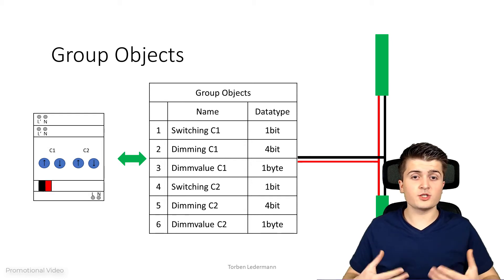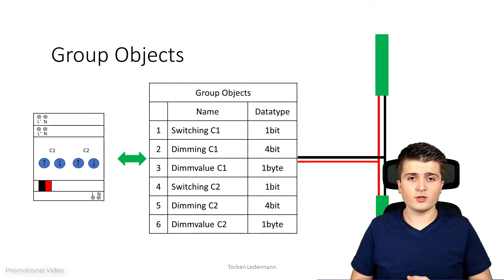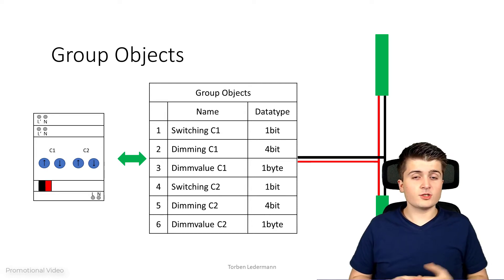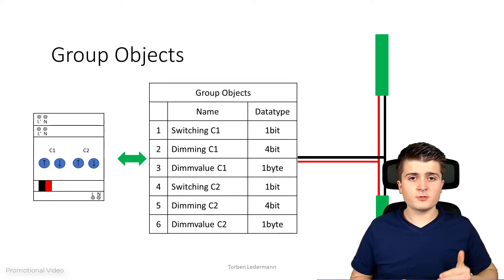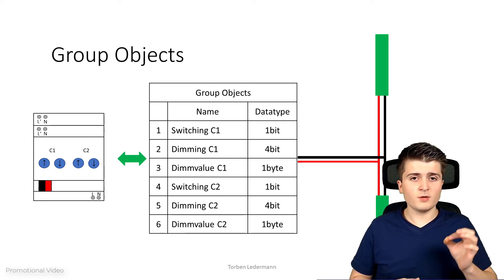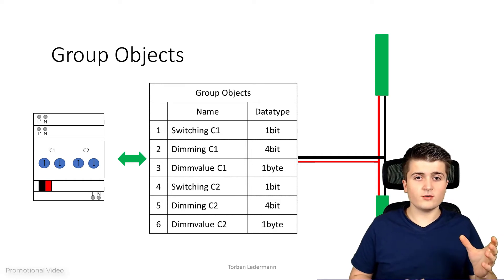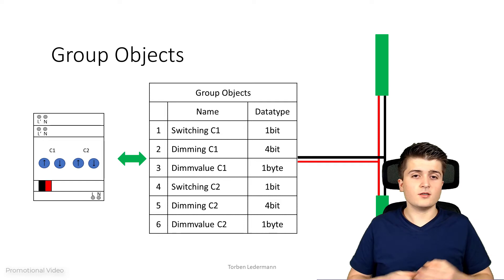In practice we have many more group objects depending on the parameterization of the device and the device itself. For example, in practice we would also have feedback objects, log objects, etc. What you can also notice is that each group object has its own data type. This makes sense because the information for switching is much smaller — it is simply on and off — compared to the dimming value itself, where we need to send a value between 0 and 100%. So each group object has a data type associated to it.